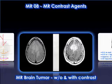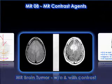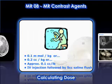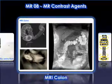The 8th module of the MR Registry Series on MR Contrast Agents describes the usages of contrast agents, how to calculate the standard dose, discusses the clinical indications, and concludes with the various contrast agents available and those under investigation for use in MRI.